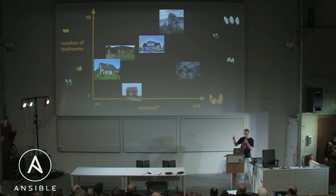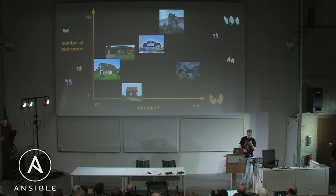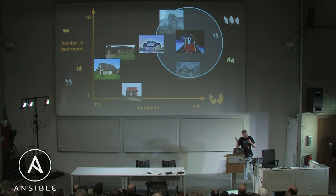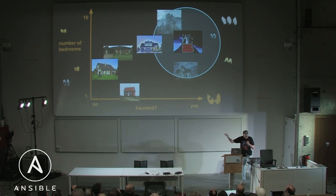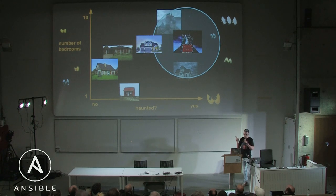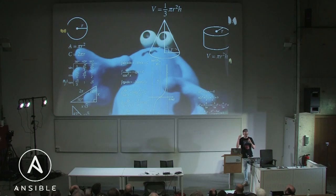We fill our database with real estate listings and plot those vectors on a graph. Then if we want to search for the 1980s British claymation show Trapdoor, we look at the number of bedrooms and likelihood to be haunted of that television show, plot it on the graph, and return everything that is close to it on that graph. The real ones are a little more complicated — they use something called cosine similarity rather than Google Slides — but you get the picture.